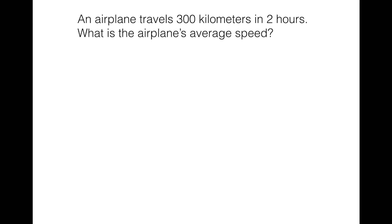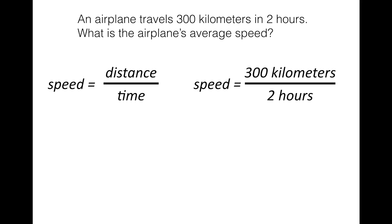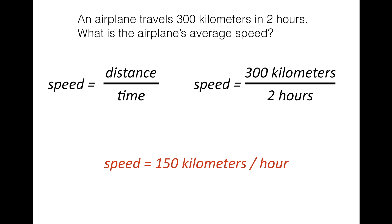Let's do a math problem. An airplane travels 300 kilometers in two hours. What is the airplane's average speed? We use our formula: speed equals distance divided by time. We substitute: speed equals 300 kilometers divided by 2 hours. Dividing 300 by 2 gives us a speed of 150 kilometers per hour. Pretty simple — just remember S equals D divided by T.